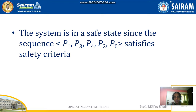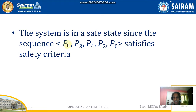This is the first part of Banker's algorithm. The safe sequence is: P1, then P3, then P4, then P2, then P0. If you follow this sequence, the system will not be in a deadlock — it is in a safe state. The second part, the resource request algorithm, I will explain in the next video. Thank you all.